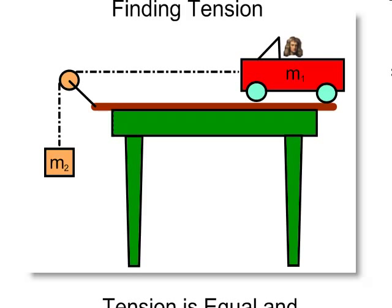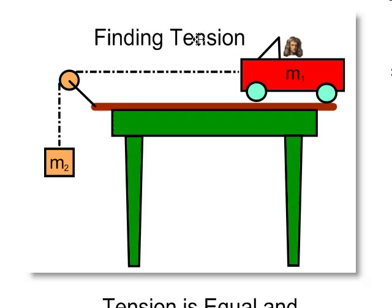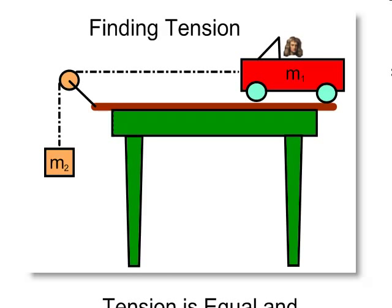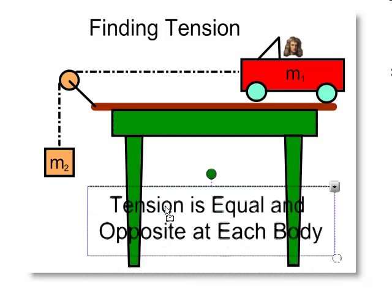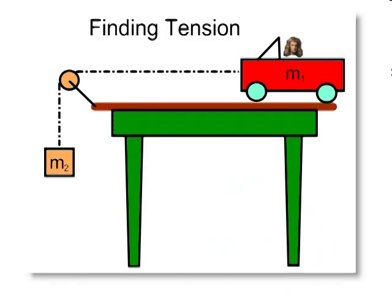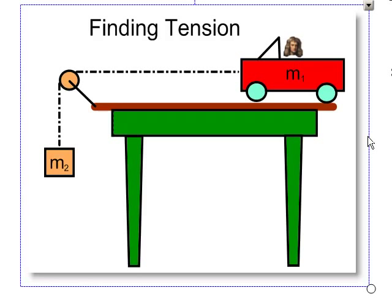The second thing that we'll be dealing with with a system like this is finding the tension in the string. And tension is equal and opposite in direction for both masses, so I'm going to work with only one body to begin with, and that is the trolley car.